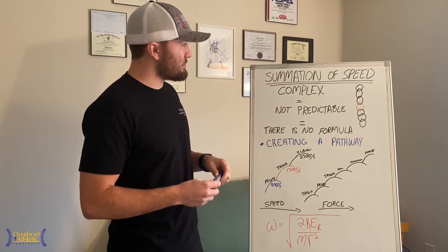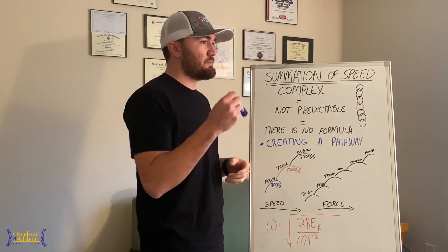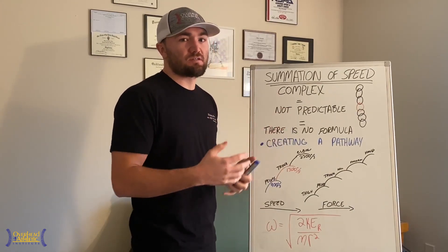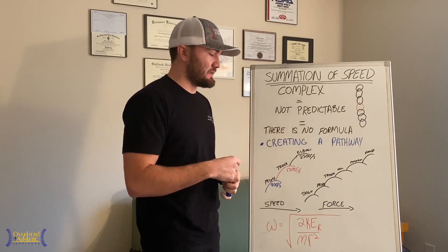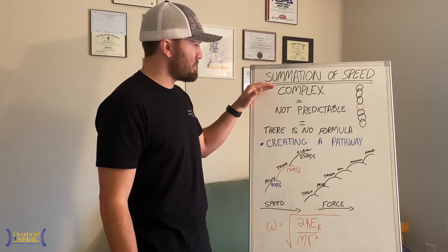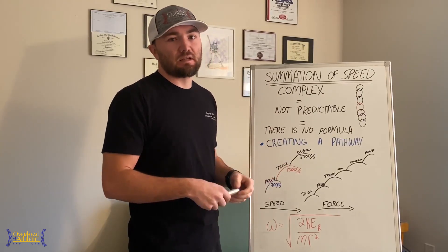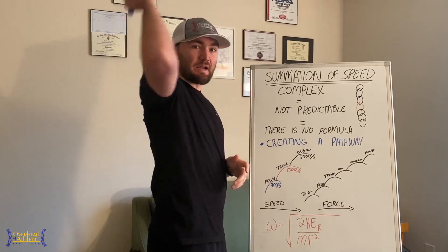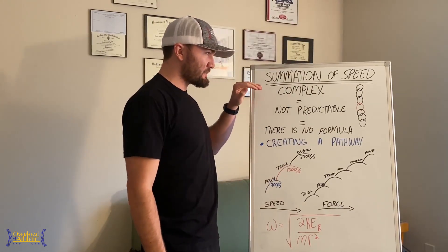Looking at summation of speed—it's a physics principle that refers to how one moves through a movement such as the throw and creates the highest possible velocity. That's what we're looking at here: ball velocity. The same principle applies to maximizing racket speed or clubhead speed in golf. First, let's talk about this.